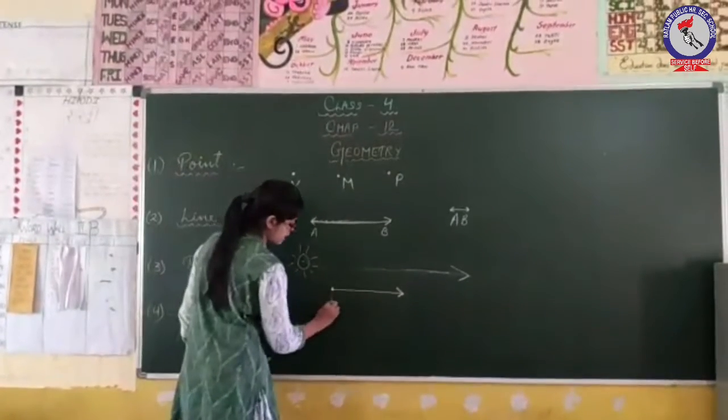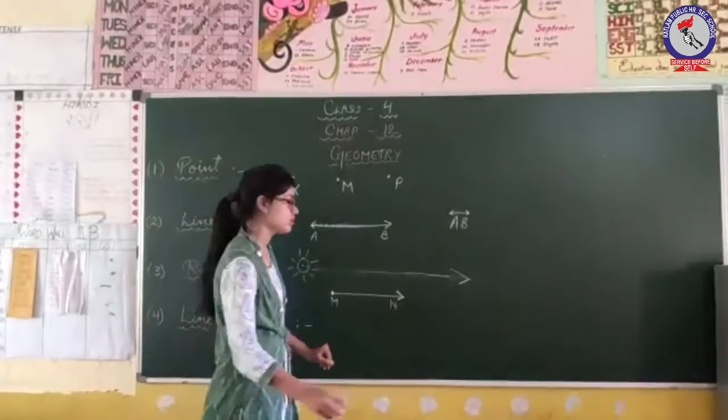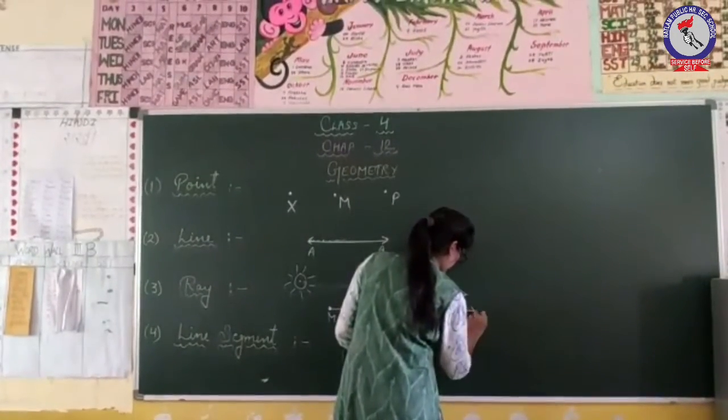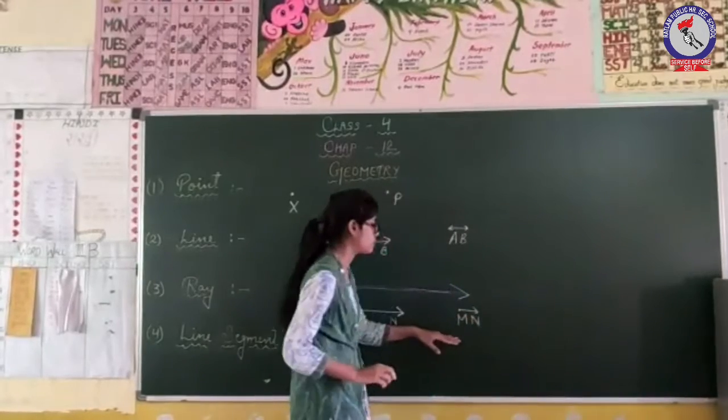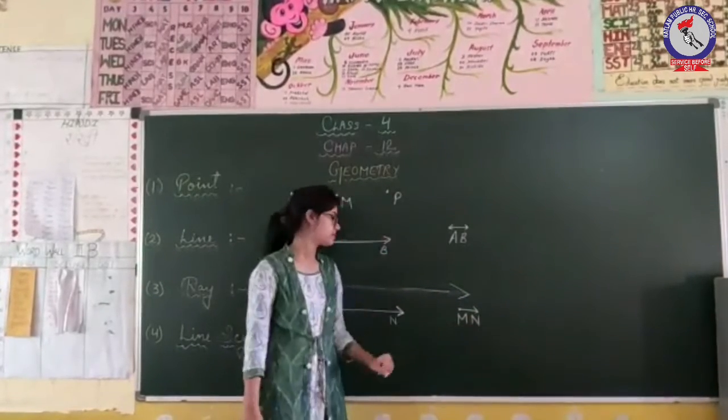For example, we have ray MN. Now, how do we represent this? We will represent it as ray MN.